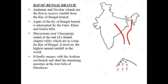The Bay of Bengal branch has two sub-branches: one enters from this side and another enters through northeast India. When it enters northeast India, there is a mountain range — the Garo, Khasi, and Jaintia Hills — where the wind is obstructed and causes heavy rainfall. Shillong is located beyond the Garo, Khasi, and Jaintia Hills, which is why it receives less rainfall.